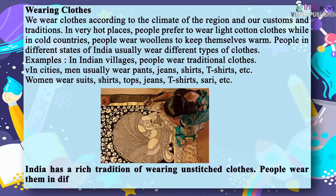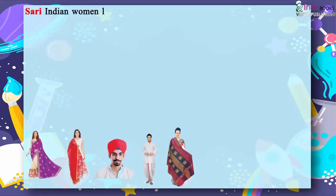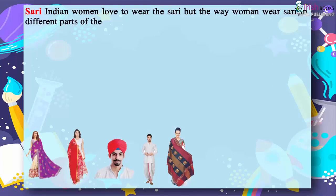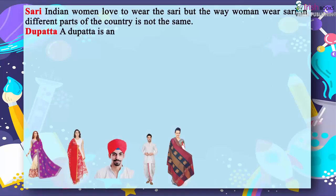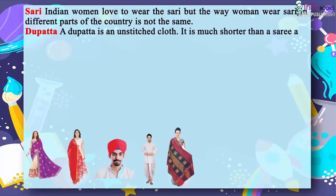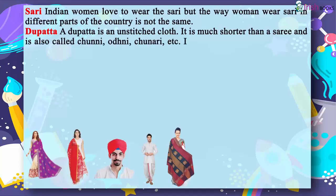India has a rich tradition of wearing unstitched clothes, and people wear them in different ways. Indian women love to wear the saree, but the way women wear saree in different parts of the country is not the same. A dupatta is an unstitched cloth, much shorter than a saree, and is also called chunni, odini, chunari, etc. It is worn by women in different styles.